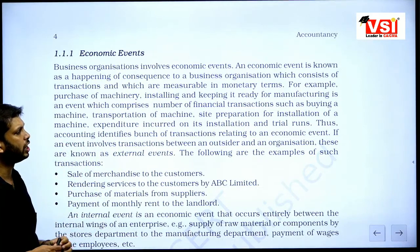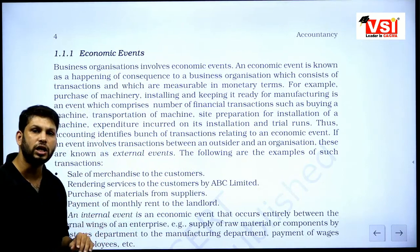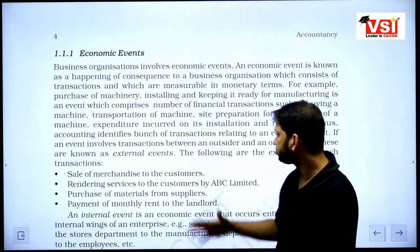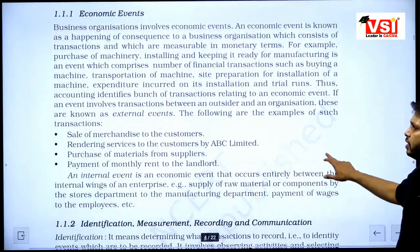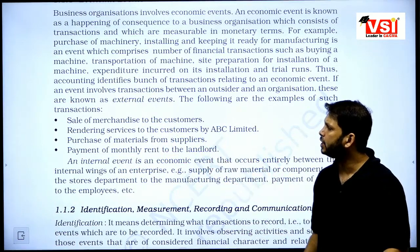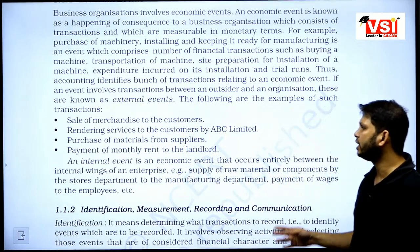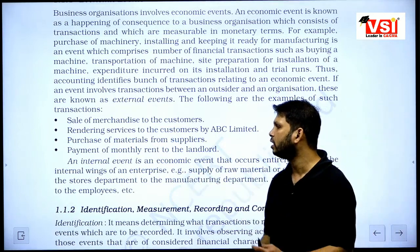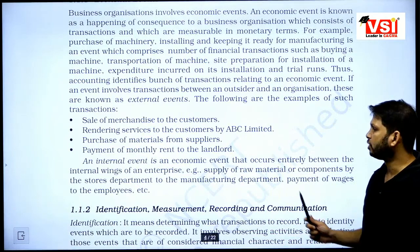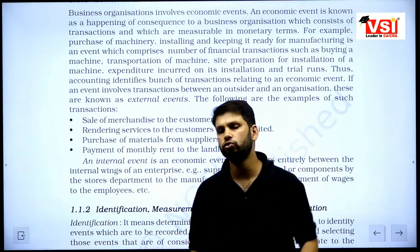Accounting identifies a bunch of transactions relating to an economic event. If an event involves transactions between an outsider and an organization, these are known as external events. An outsider is any person who does not belong to the business — not an employee, not the owner. Examples include sale of merchandise to customers, rendering services, purchase of materials from suppliers, and payment of monthly rent to the landlord. An internal event is an economic event that occurs entirely within the internal wings of an enterprise, like supply of raw materials from the store department to the manufacturing department, or payment of wages to employees.